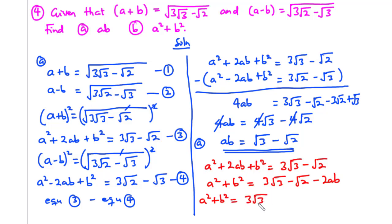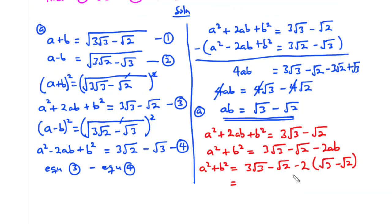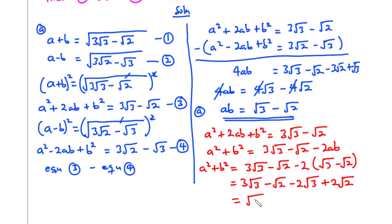So a squared plus b squared equals 3 root 3 minus root 2 minus 2 times (root 3 minus root 2). Multiplying across: 3 root 3 minus 2 root 3 gives root 3, and negative root 2 plus 2 root 2 gives plus root 2. So a squared plus b squared equals root 3 plus root 2. That's it for this question.